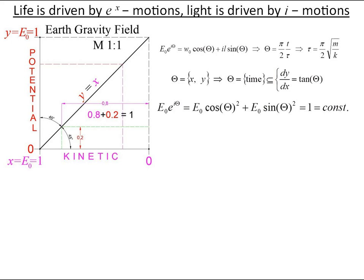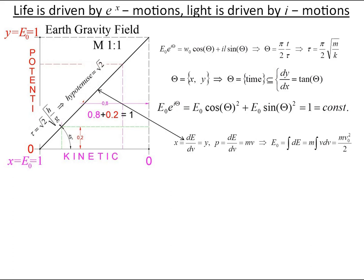In the case of a constant earth gravity potential field, we have isosceles right triangle made of kinetic and potential energy where the hypotenuse is momentum function x equals y. Isosceles right triangle hypotenuse length represents the dimensional time dimension. The hypotenuse is the driving force of x-axis kinetic energy and y-axis potential energy, but the hypotenuse slope is written as imaginary number.